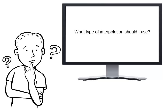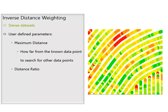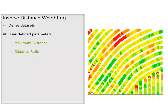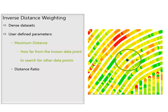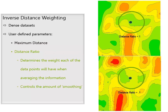So how do you decide which interpolation method to use? Generally, inverse distance weighting is better suited for dense datasets that contain many GPS points, such as yield or as-applied data. In this interpolation method, you get to define the maximum distance and distance ratio. The maximum distance tells the software what distance from the known data point to search for other data points to include when averaging. The distance ratio determines the weight or influence each included data point will have when averaging, and adjusting it controls the amount of smoothing that will occur within the dataset.